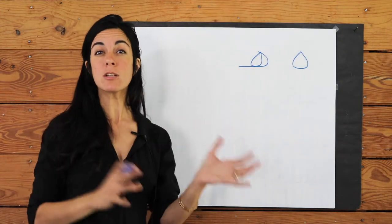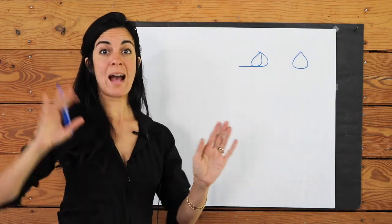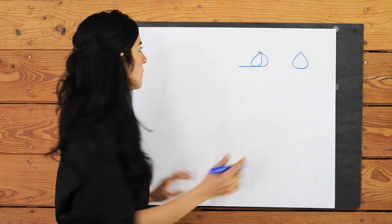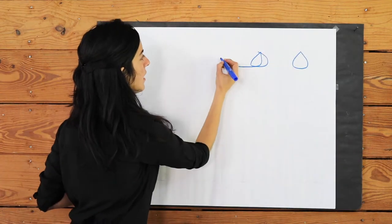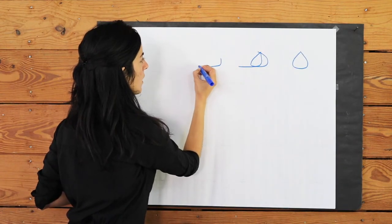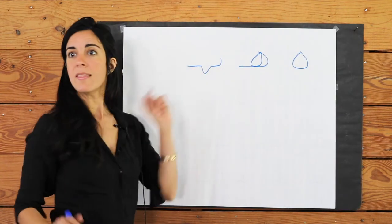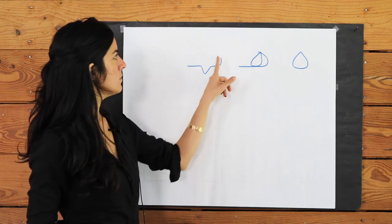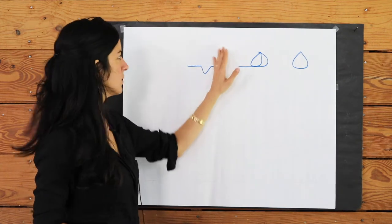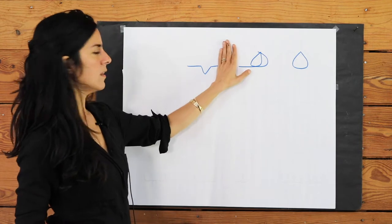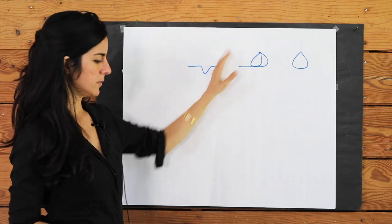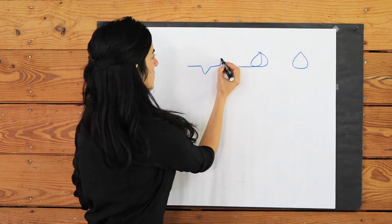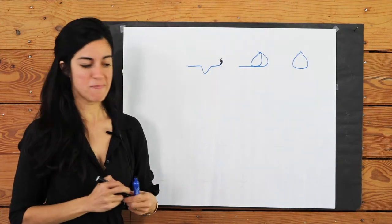If it comes in the middle of a word — so it has something before it and after it — it looks like this, kind of like a heart monitor shape.